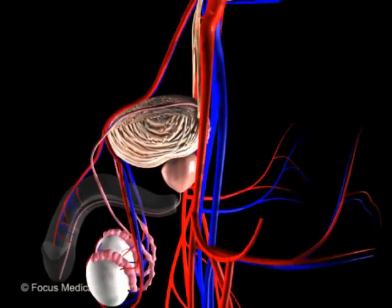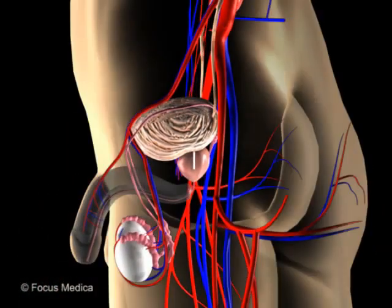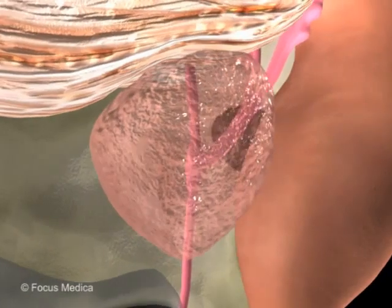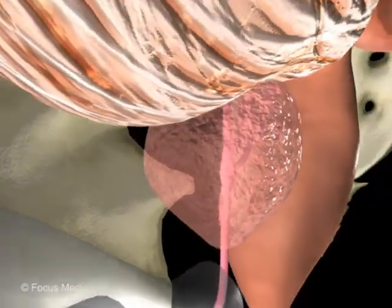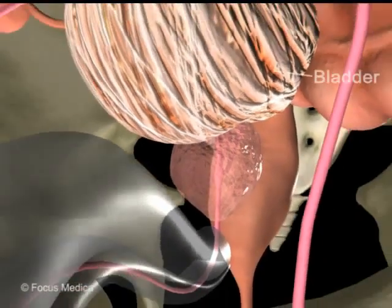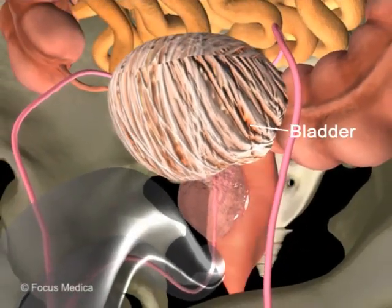Located within the pelvis, this gland ordinarily measures 3 cm long, encircling the urethra, distal to the urinary bladder, and anterior to the rectum.